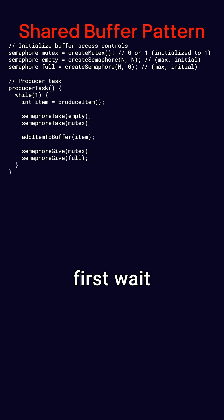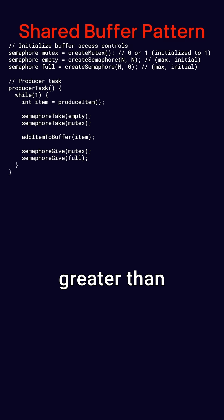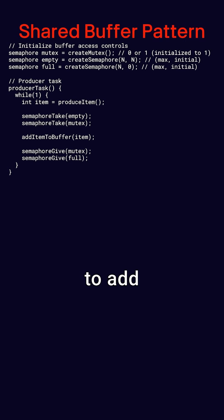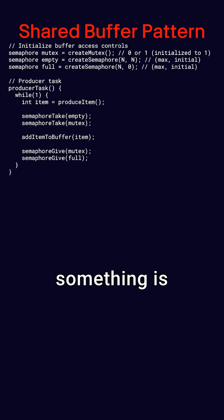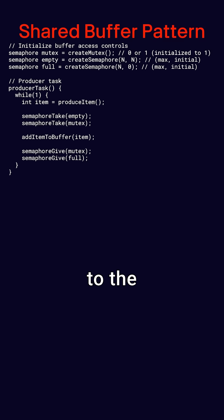Producer threads use this pattern. They first wait for the empty semaphore to be greater than zero and then acquire the mutex lock to add an item to the buffer. They then release the mutex and signal that something is in the buffer by adding one to the full semaphore.